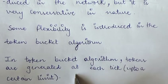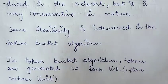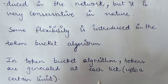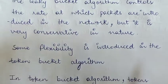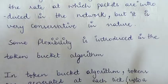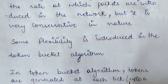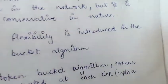In the token bucket algorithm, tokens are generated at each tick up to a certain limit — you cannot endlessly generate tokens, so there is a limit. The presence of a token means a packet can be transmitted: a packet captures the token and destroys it. The number of tokens equals the number of packets that can be transmitted. If there are extra packets, they wait for more tokens to be generated so they can capture tokens and be transmitted.